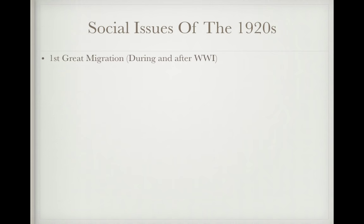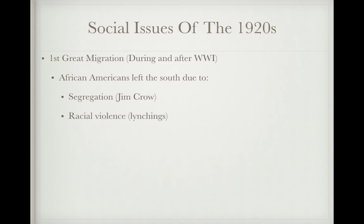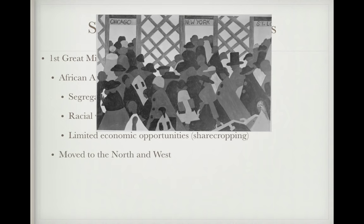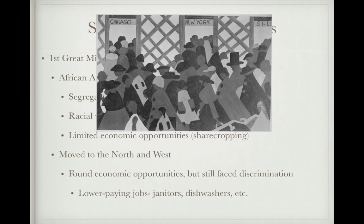The First Great Migration occurred during and after World War One — it's called the first because there is a second. African Americans were leaving the South for the North and Midwest due to segregation and Jim Crow laws, racial violence such as lynchings, and limited economic opportunities, since farming and sharecropping were the major income sources in the South. They moved to cities like Chicago, New York, and St. Louis, where they found some economic opportunities but still faced discrimination and lower-paying manual labor jobs.